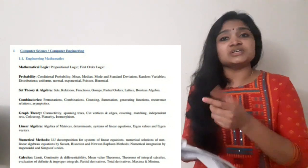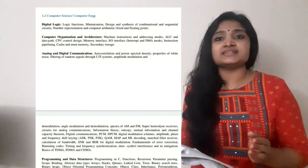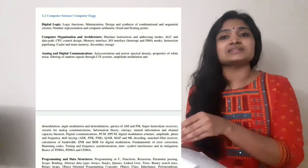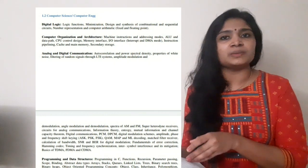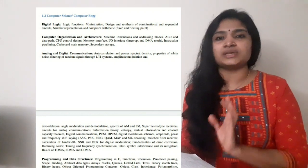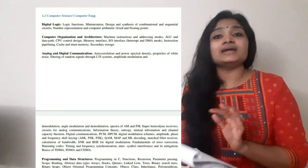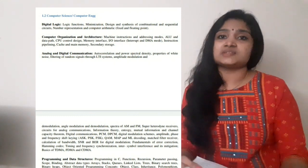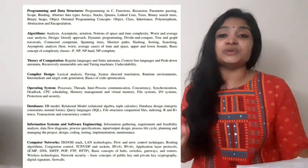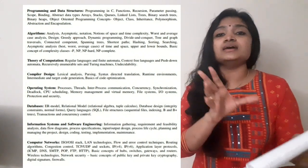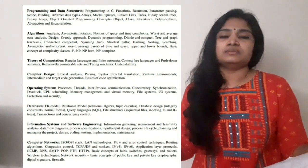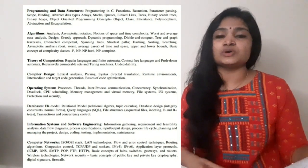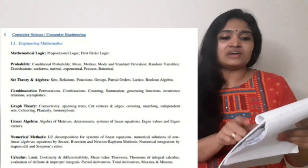For the Computer Science branch, the technical subjects you have to prepare are: digital logic, computer organization and architecture, analog and digital communication, programming and data structures, operating systems, compiler design, computer networks, and algorithms. The specific topics within each subject are mentioned in the notification.